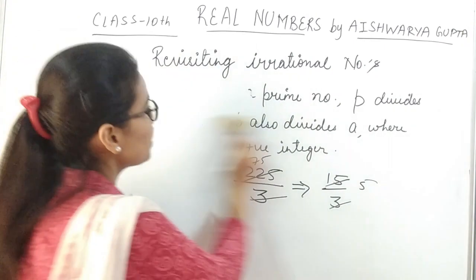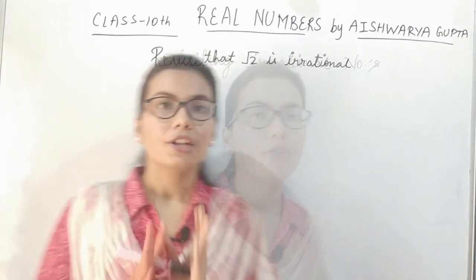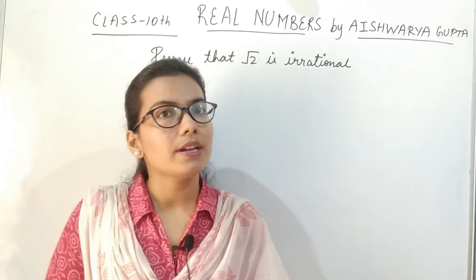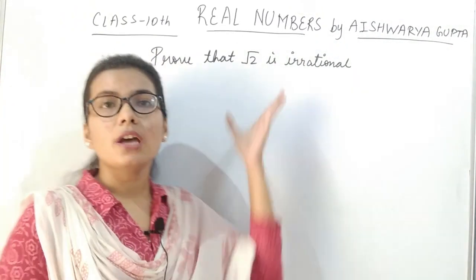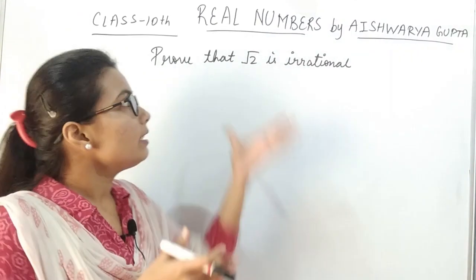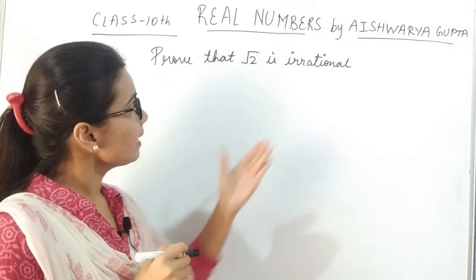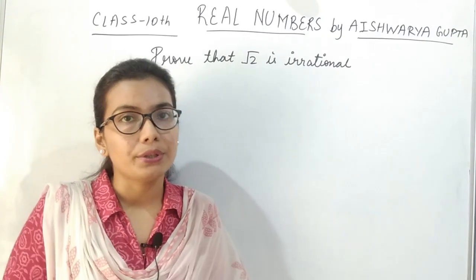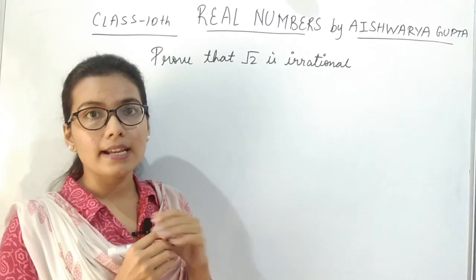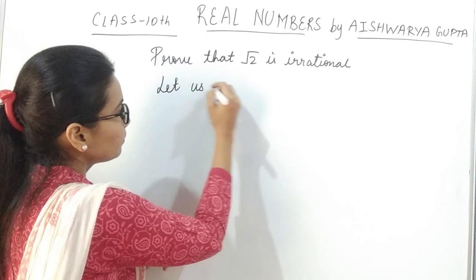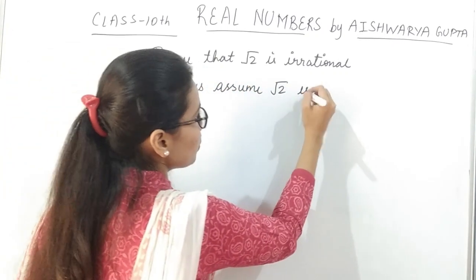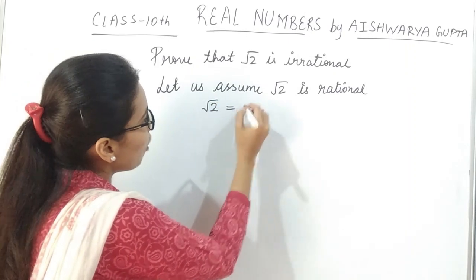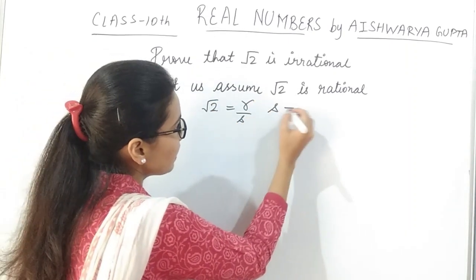Now if we have to prove that root 2 is irrational, we have to use the contradiction procedure. In the contradiction procedure, we assume the exact opposite of what we want to prove. So, to prove that root 2 is irrational, we assume that root 2 is rational. If root 2 is rational, then we can write it in the form R upon S, where S is not equal to 0.